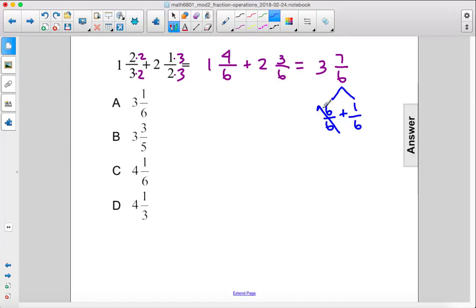This will simplify to one and then we just add that to three and we get four, and then we are left with one-sixth. So the answer is four and one-sixth, which is C.